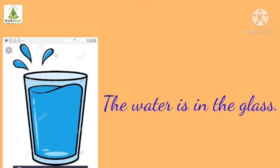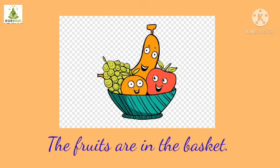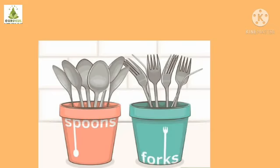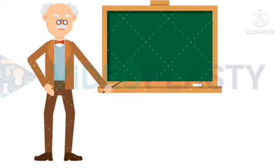Example: the water is in the glass. Where can you see the water? In the glass. The fruits are in the basket. Where are the fruits kept? In the basket. Spoons are in the stand. Where can you see the spoons? In the stand. And so, we learned in which cases we use 'in'.